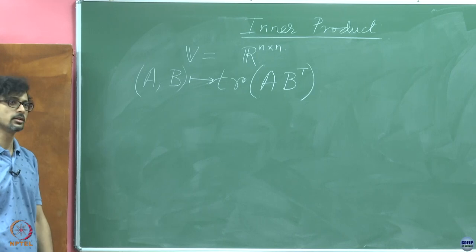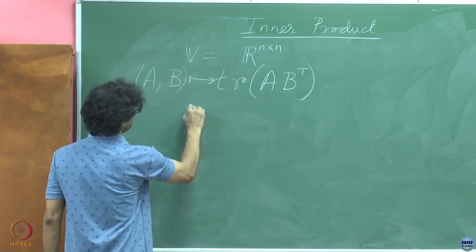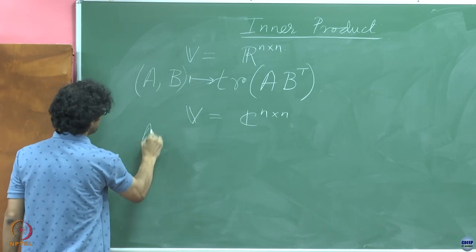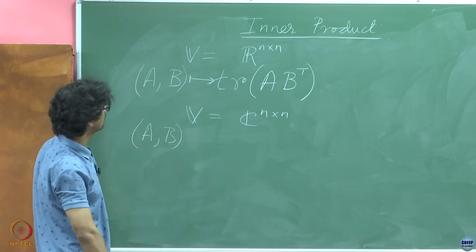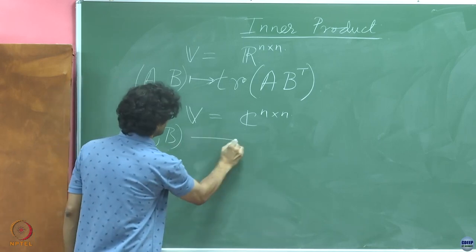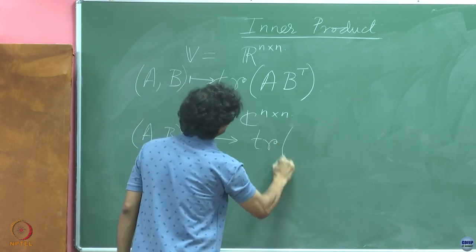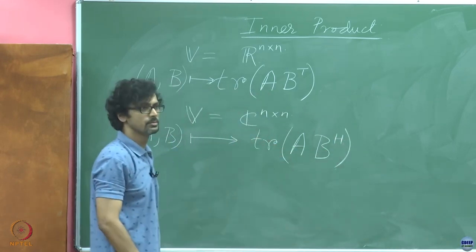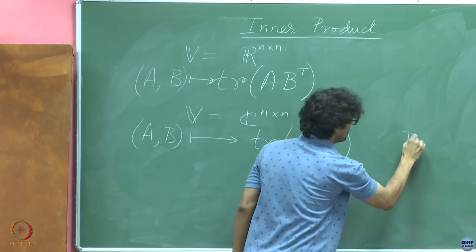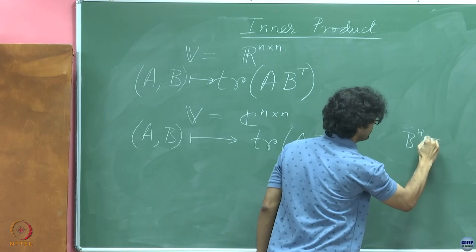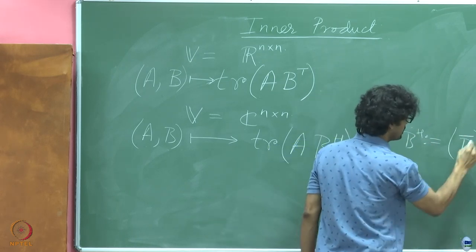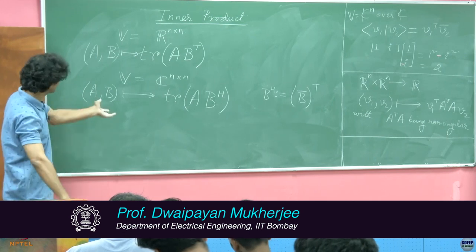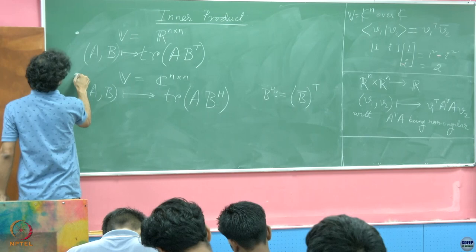This is also an example of an inner product over the space of matrices. If we now introduce complex matrices: you can take the pair of matrices A and B — complex matrices — and they get mapped to the trace of A times B Hermitian. When I say Hermitian, it is basically the transpose of the conjugate. So B Hermitian is defined as: take the conjugation of B and then transpose it. That is also an example of an inner product.